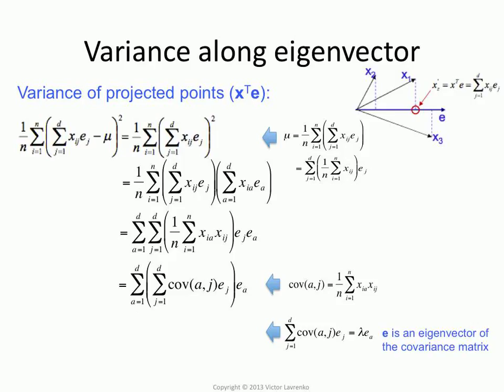Okay, so this whole part becomes lambda ea, and what I have left is the sum over all the attributes lambda ea times ea. I can move lambda outside because it's a constant, it's an eigenvalue, it's the same thing across all attributes, and what I have left is the sum of the squares of the components in vector e.